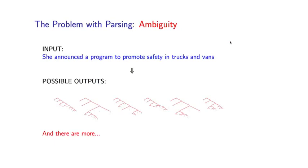So let's illustrate this issue of ambiguity with the following sentence, which is quite short and rather innocuous looking. She announced a program to promote safety in trucks and vans.